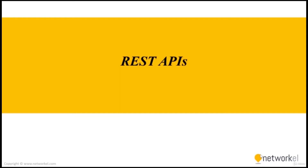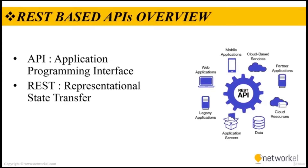In our next section we will talk about REST APIs. Let's start with what an API is and why it is important. API stands for Application Programming Interface — basically it allows one piece of software to talk to another. There are lots of different kinds of APIs, but when you hear people talk about Twitter's API or Google's API, what they are talking about is a REST API, which stands for Representational State Transfer.